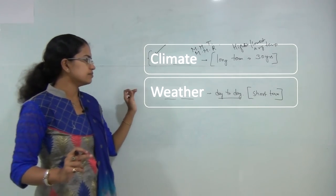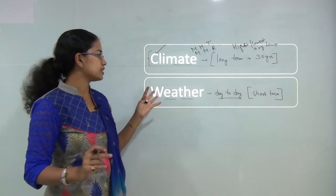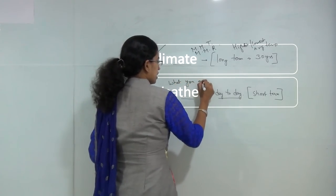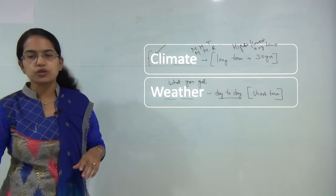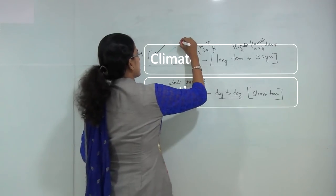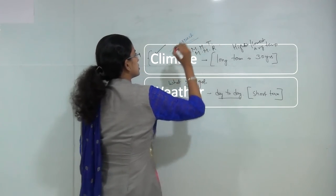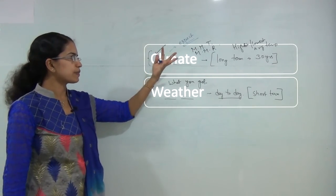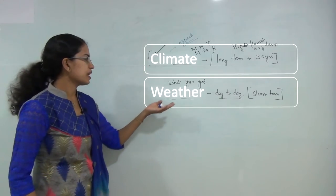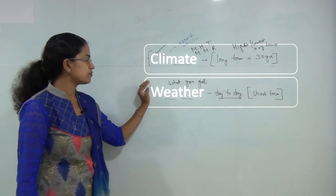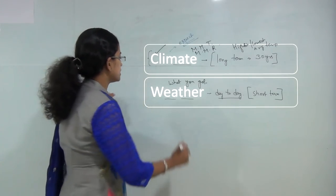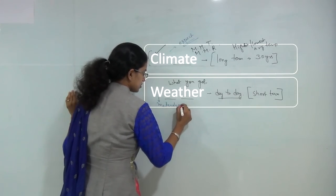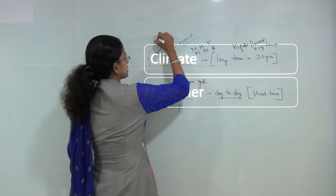In very simple terms, weather is something what you get, however climate is something what you expect. I expect the climate to be good this year — not too rainy and not very hot. What is happening today is what I am getting, and that is weather. The study of weather is known as meteorology, and the study of climate is known as climatology.